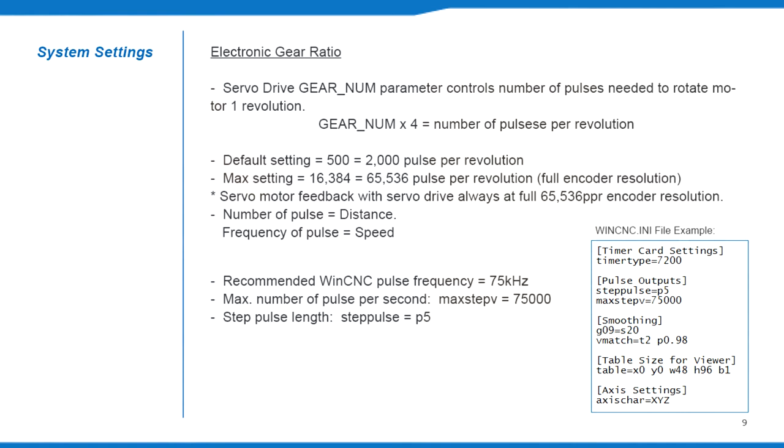We recommend setting WinCNC at 75kHz pulse frequency and 5 microsecond pulse length. Refer to the WinCNC manual for configuration file definitions.